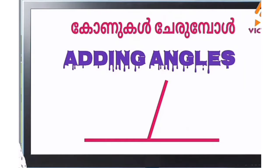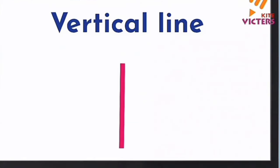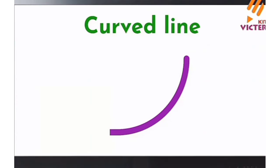This line is a horizontal line. Let's start with a small line — it's called a vertical line. That is also a curved line.